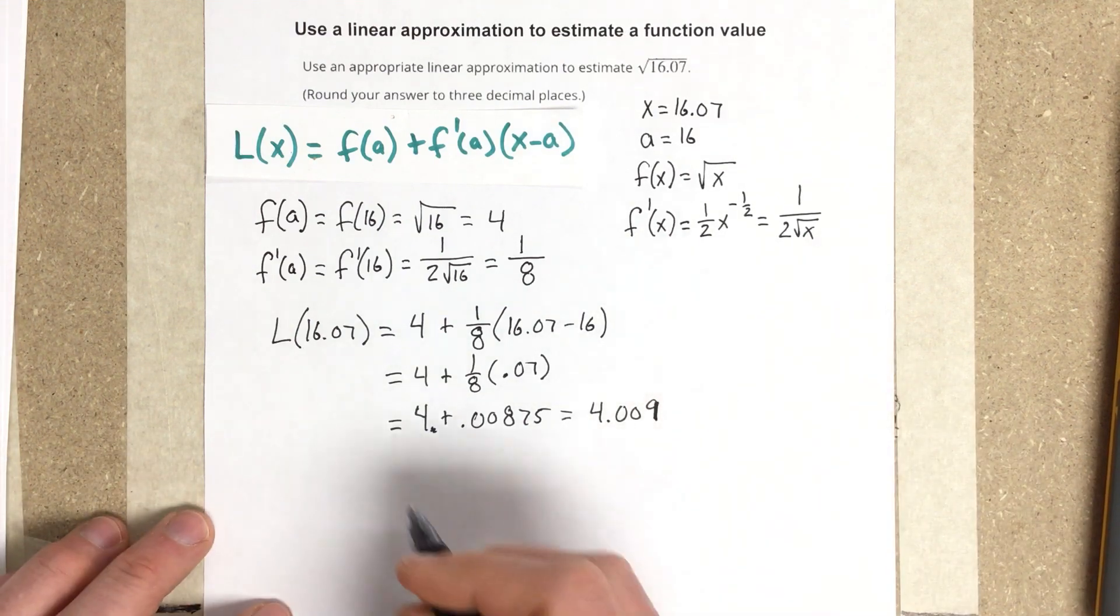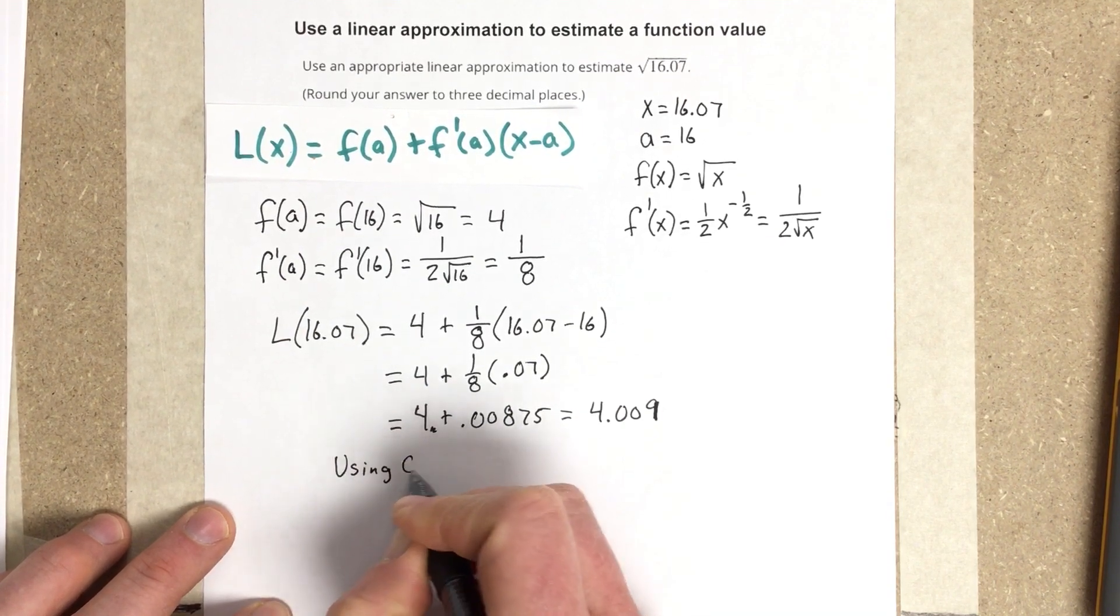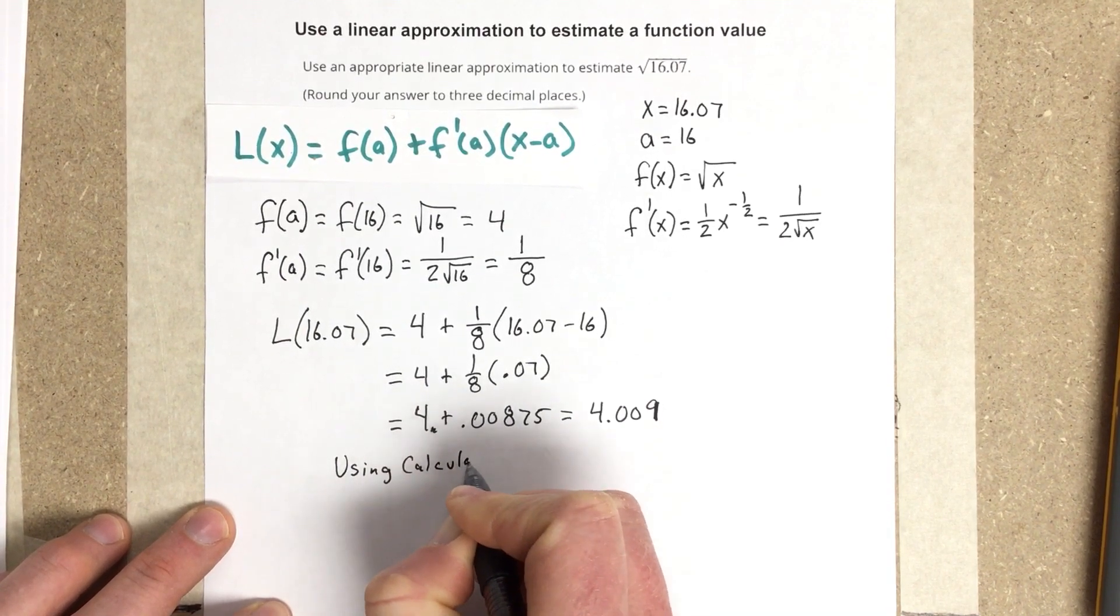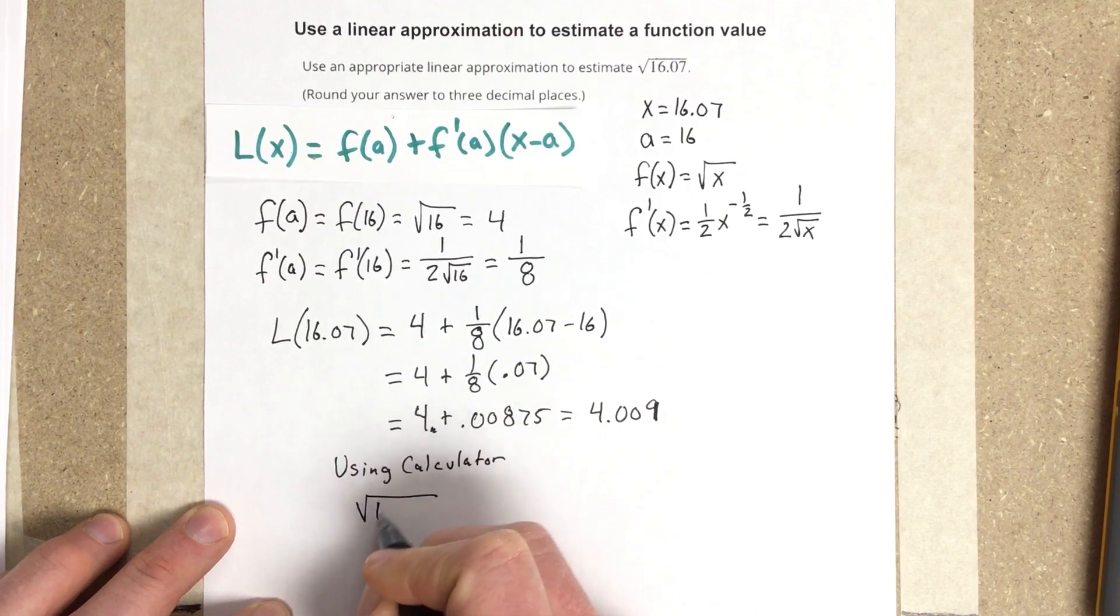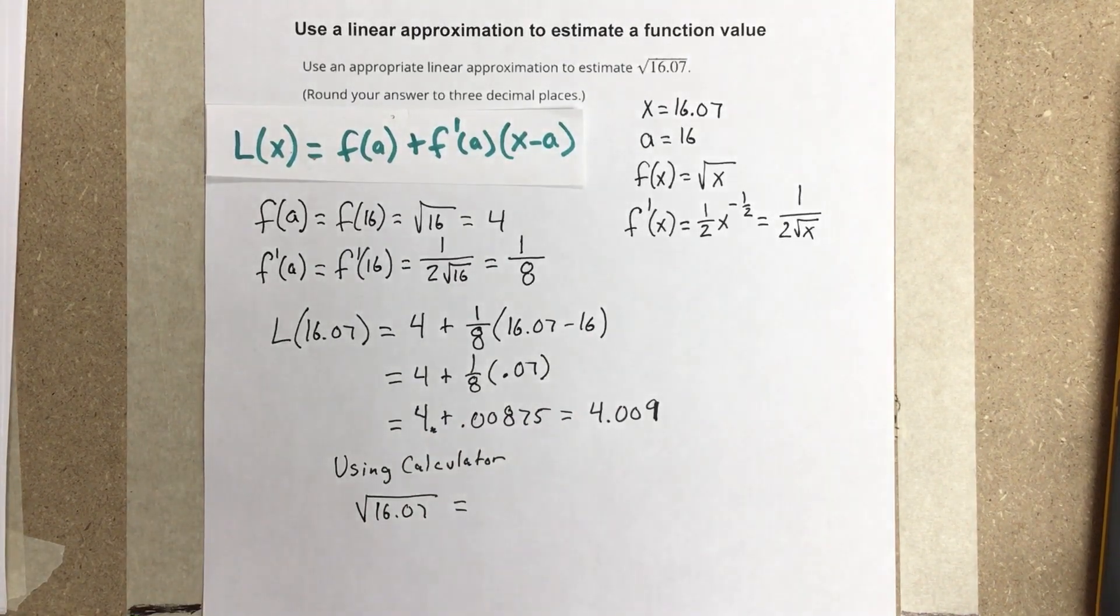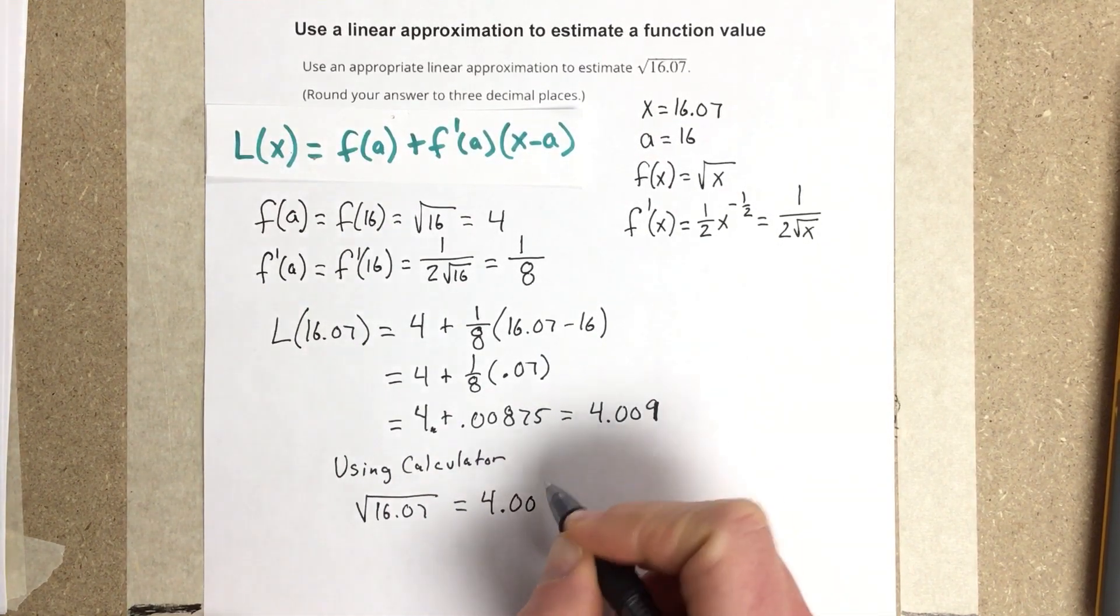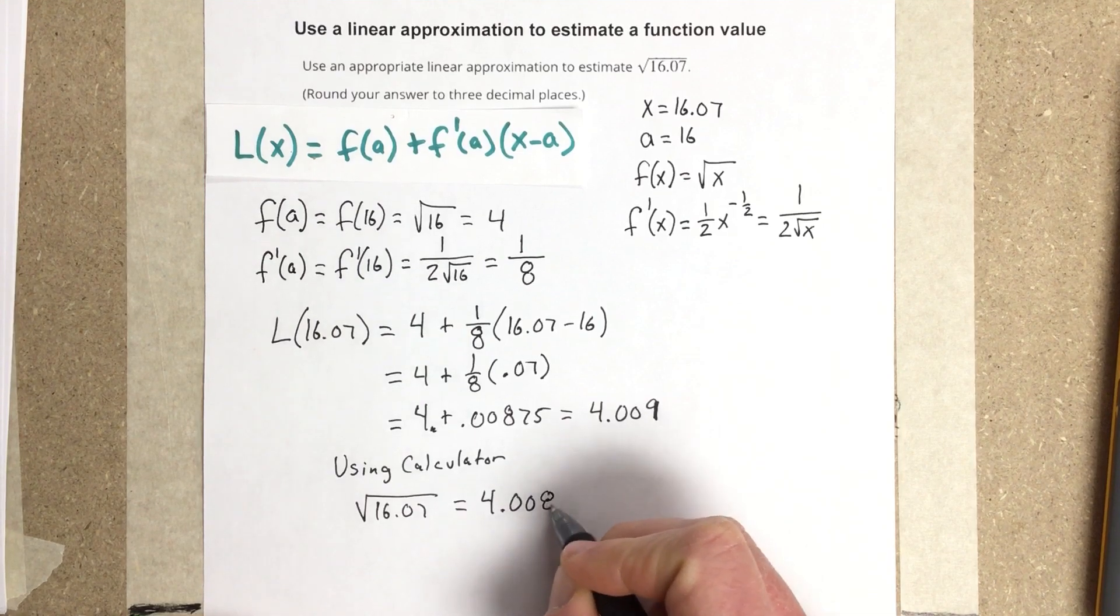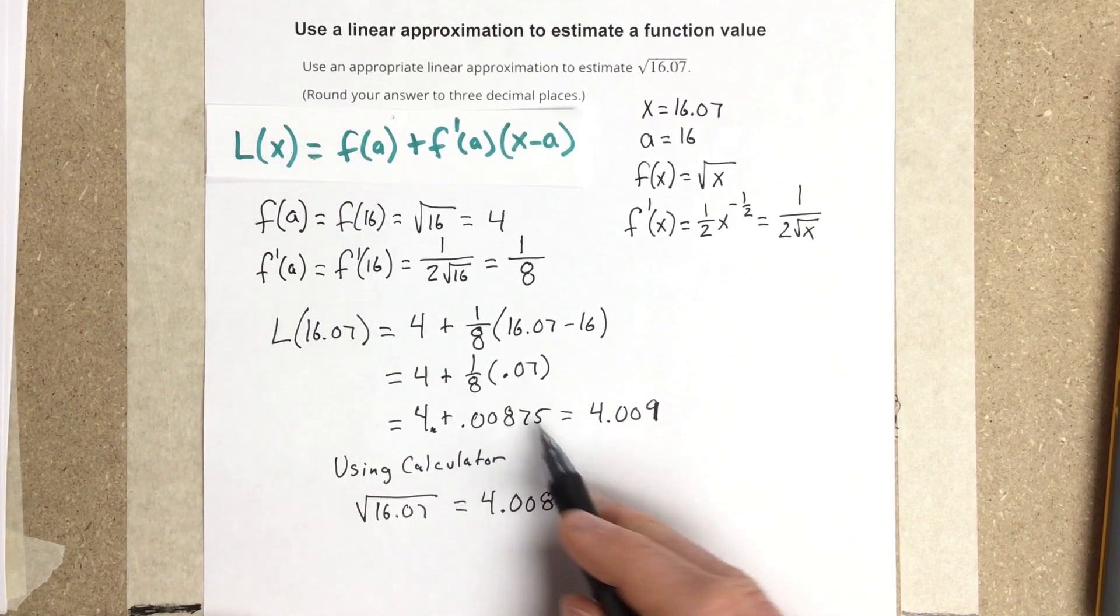Now, just for kicks, let's take and actually figure this out using the calculator, so I'm just going to say using calculator. We're going to say root of 16.07 is equal to 4.00874. And you can see that's really close to what we were getting with our approximation here.